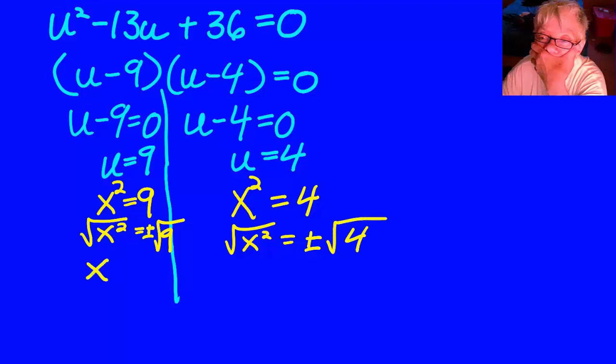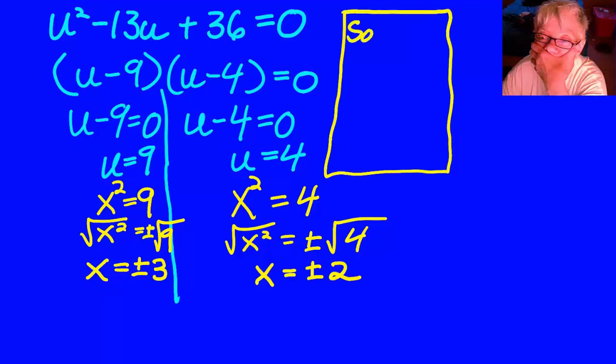So, on the left I get x equals plus or minus 3, and on the right I get x equals plus or minus 2. So, it ends up there are four solutions to this quartic equation, which is entirely appropriate. If the highest power is 4, I'll have four solutions.